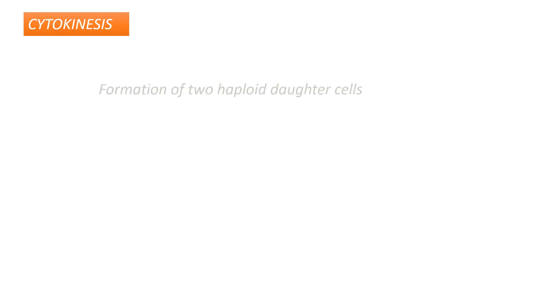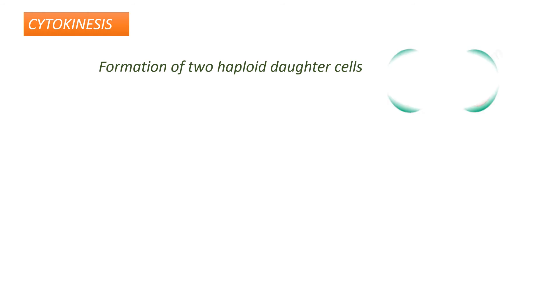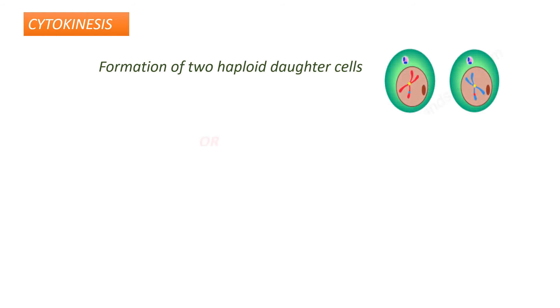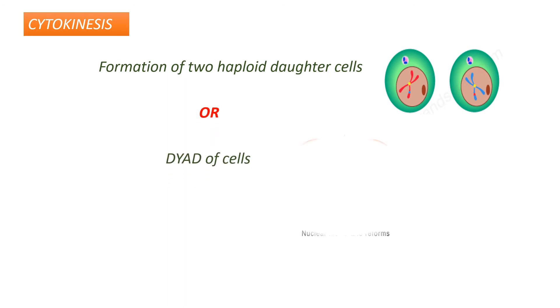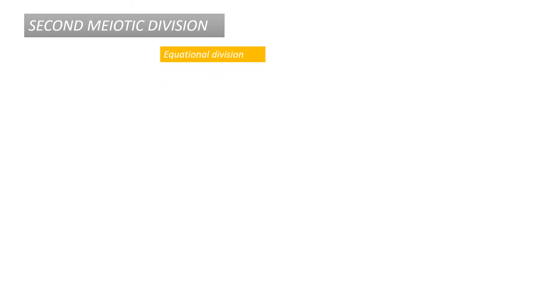After the first nuclear division, there is cytoplasm division called cytokinesis. This is different in plants and animals — in plants it is by the cell plate method, and in animals it is by the furrow method. Cytokinesis results in the formation of two haploid daughter cells. Sometimes there is no cytokinesis after meiosis I, which results in a dyad of cells — the two nuclei remain in a single cell without cytoplasm division.